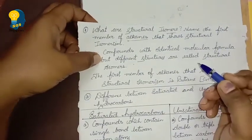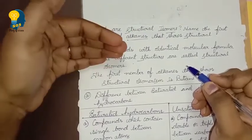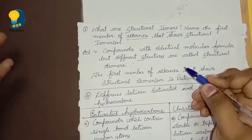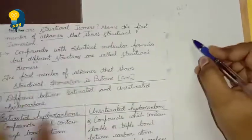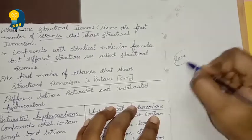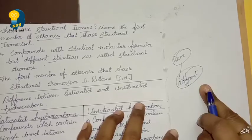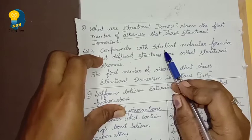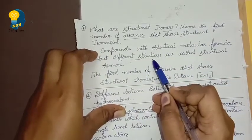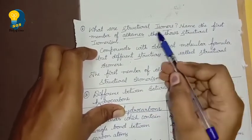So when the question asks 'what are structural isomers,' first let's understand what isomers are. What are isomers? Isomers are the compounds which have the same molecular formula but different structural formula. That is actually one clear answer. What are isomers and what are structural isomers — the answer is similar. So structural isomers are the compounds which have identical molecular formula but different structures. Even though their molecular formula is same, they have different structures. Hence we call them as isomers.